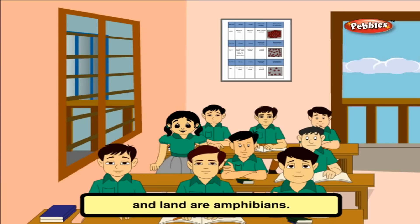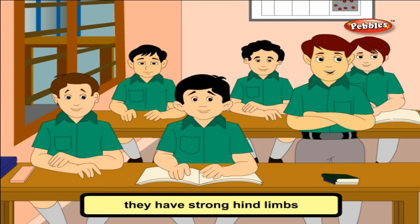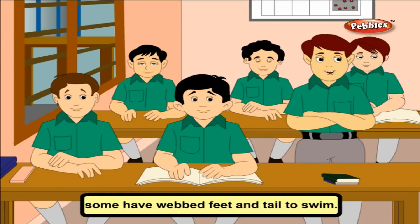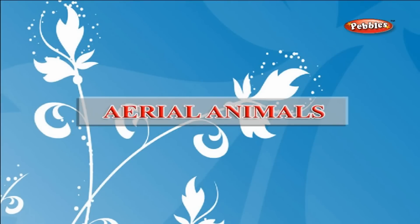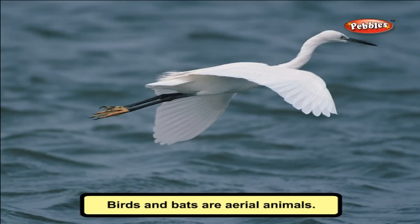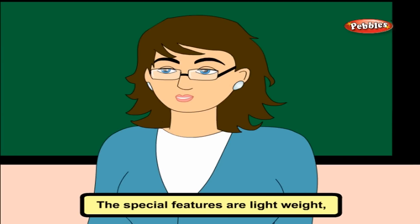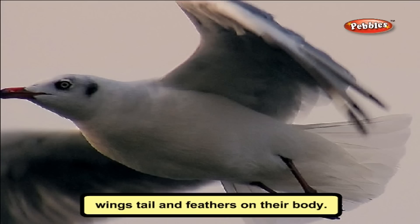Amphibians — like frog, salamander, and toad — live both in water and on land. Their special features are strong hind limbs to jump and move. Some have webbed feet and a tail to swim. They can also breathe through their skin when they are in water.